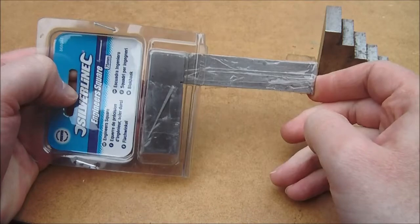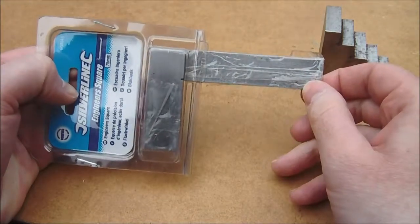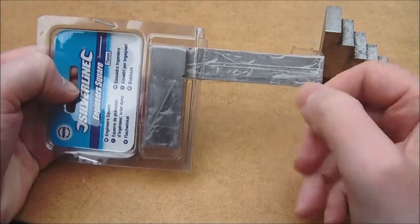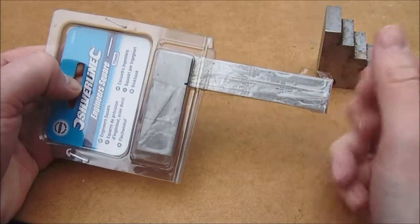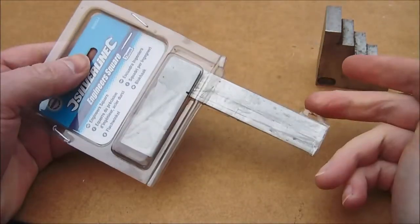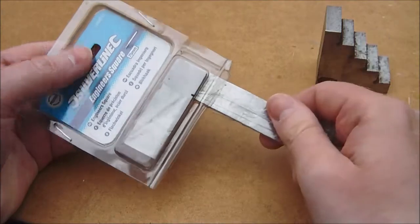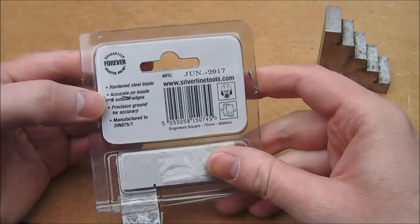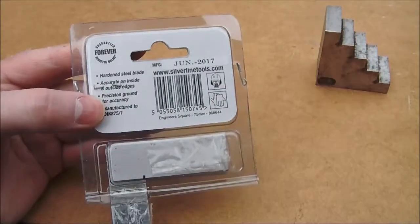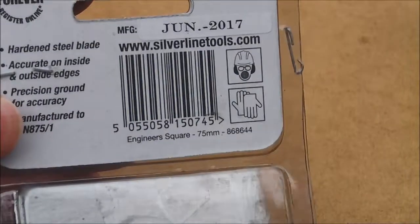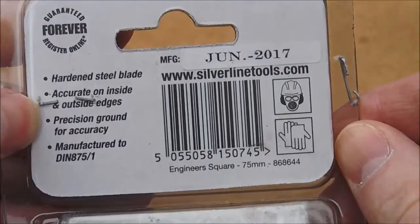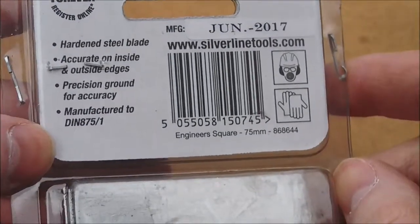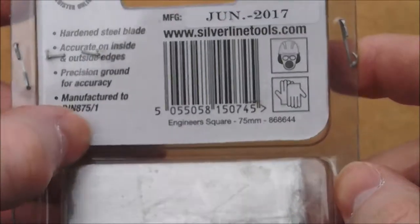For engineering purposes, that needs to be bang on 90 degrees square. Some DIY squares might be ever so slightly out, but for carpentry and DIY work, what it looks like to the naked eye, they're usually okay. But a lot of the cheap engineering squares sold out there leave people with junk because they're not good enough. Hardened steel blade, accurate on inside and outside edges, precision ground for accuracy, manufactured to DIN 875/1.